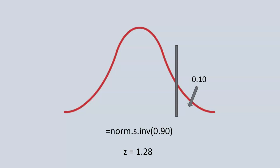You would then be able to plug in this 1.28 into the z-score formula and work your way backwards to find your x, to find out which x value would give you the top 10%.